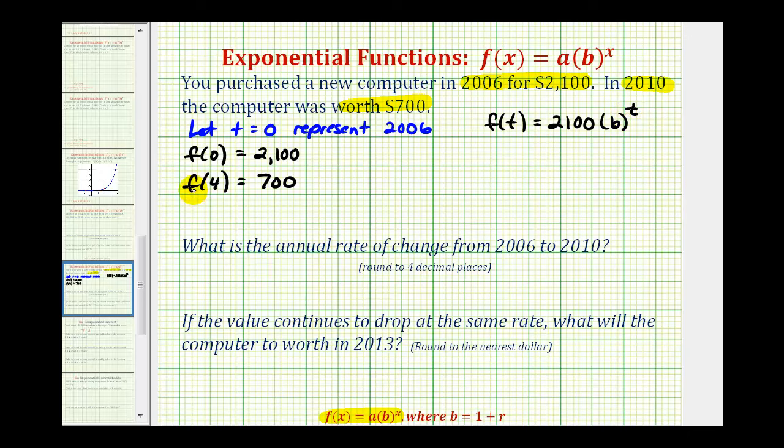Now we can use f of four equals 700 to solve for the base b. f of four would be equal to 2,100 times the base b raised to the fourth power, which we know must equal 700. So now we'll solve this equation for b.